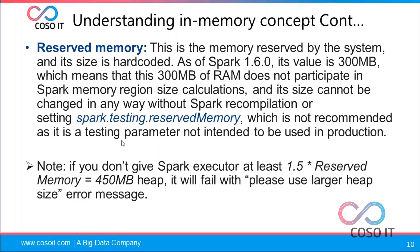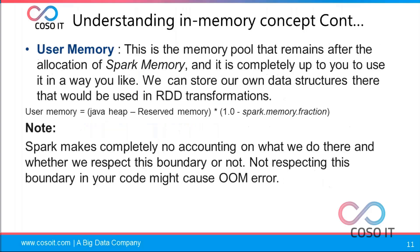Note: if you don't give the Spark executor at least 1.5 times the reserved memory — that is 450 MB heap — it will fail and throw an error. When configuring spark executor memory, you should decide on the cluster size. Per node, the RAM size should be at least 8 GB with at least 16 cores.